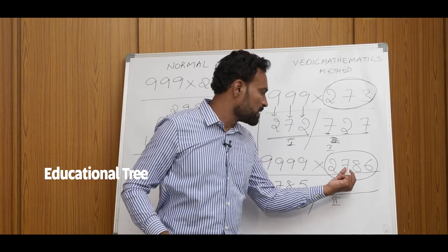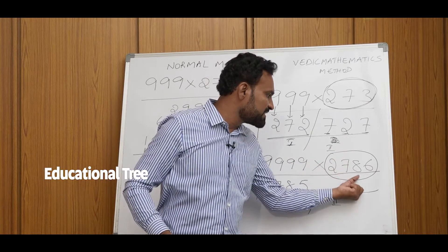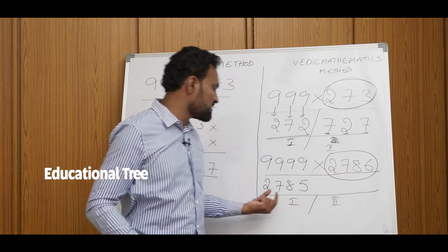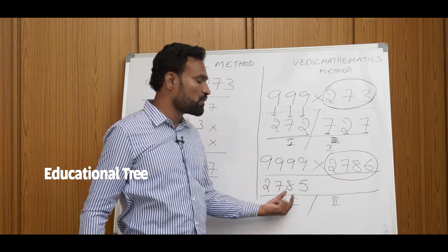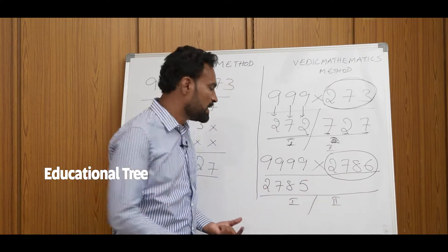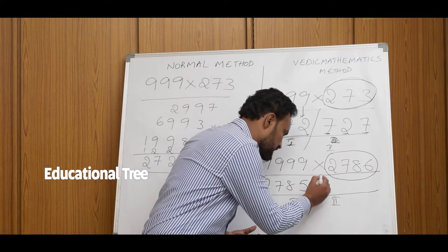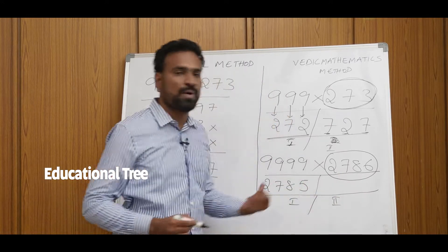By applying Eka Noonena Purvena, we take 2786 and reduce one value, giving us 2785. That is the first part. Now for the second part.